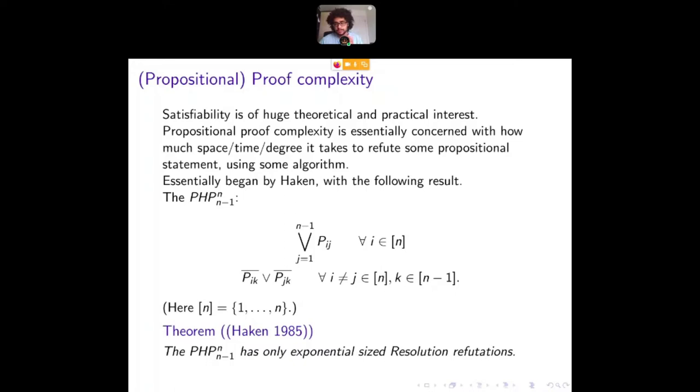Like a prototypical and actually the seminal result in this field is this result for the so-called pigeonhole principle. The pigeonhole principle is a contradiction that, given some natural number N, says that you could fit N pigeons into N minus one holes without a collision. As a CNF formula, it looks like this. It's the conjunction of all these clauses with roughly N squared variables.